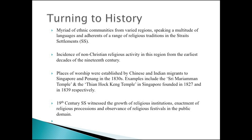Looking at the Strait Settlements in the 19th century, we see a whole range of ethnic communities from varied regions speaking different languages and belonging to different religious traditions. The incidence of non-Christian religious activity in this region can be traced to the earliest decades of the 19th century. Places of worship were established by Chinese and Indian migrants to Singapore and Penang in the 1830s. The Sri Mariamman Temple in Singapore is dated to 1822, and the Thian Hock Keng Temple was founded in 1839.